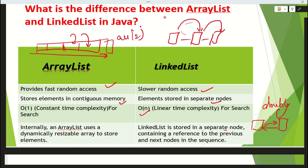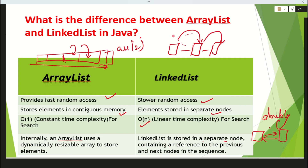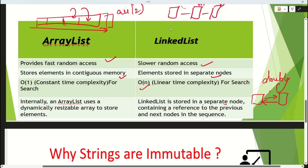In a LinkedList, each node has a reference to the front and previous node — this is called a doubly linked list. So to summarize: ArrayList has fast random access, LinkedList has slow random access. Elements in ArrayList are in contiguous memory; in LinkedList they are in separate nodes. Searching in ArrayList is O(1), in LinkedList it is O(n). ArrayList is dynamically resizable; LinkedList uses separate nodes.